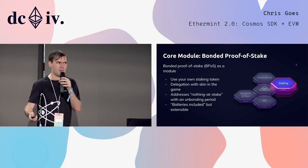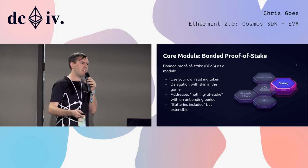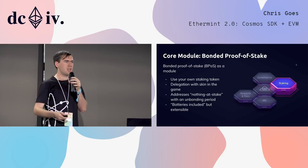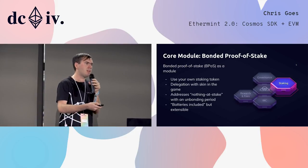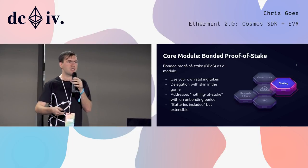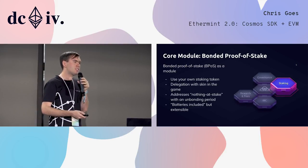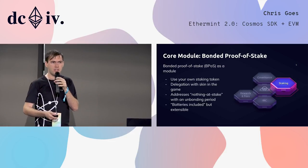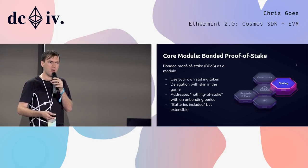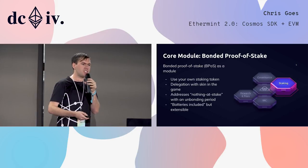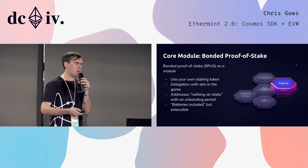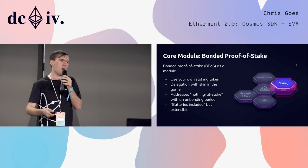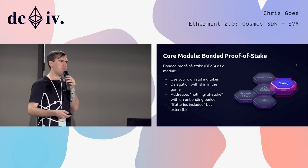Bonded proof-of-stake addresses the nothing-at-stake problem with an unbonding period. Both validators and delegators, when they want to participate in consensus, have to lock up tokens — for three weeks at launch for the Cosmos Hub, but for a configurable amount of time. As long as those tokens are locked up, if an infraction is discovered, they can be slashed. We've tried to build this module to be batteries included but extensible. You could import it as is and have a fully functional proof-of-stake algorithm, or you can modify it — add custom slashing conditions or change the parameterization of slashing and staking conditions.